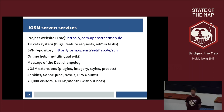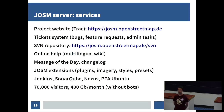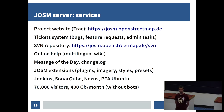Talking about the JOSM server — we are a standalone project, so we have our own infrastructure. The server runs the project website built on Trac, we host the ticket system allowing you to report bugs and feature requests, as well as the official SVN repository. We have an online help accessible from JOSM itself, we have the message of the day displayed when you run JOSM, we list the available extensions, and we have CI and QA tools to help us improve JOSM.